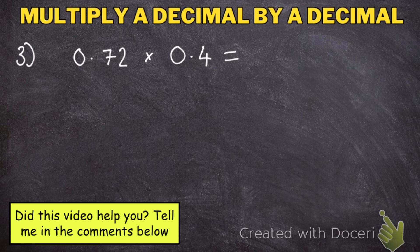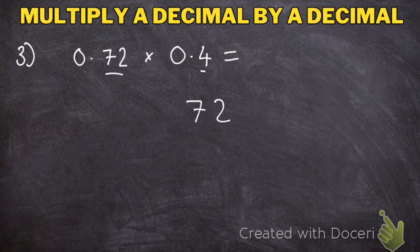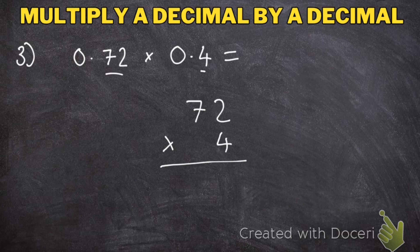In this example, we have 2 decimal numbers that both start with 0, but nothing changes. I'm going to take the digits that have numbers: 72 multiplied by 4. I'll pretend the decimals and zeros don't exist. 4 times 2 is 8. 4 times 7 is 28.